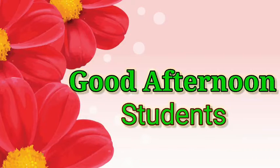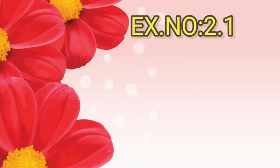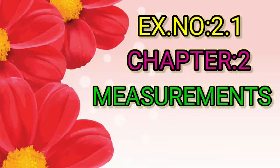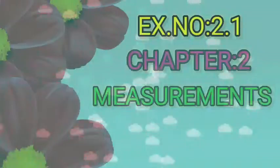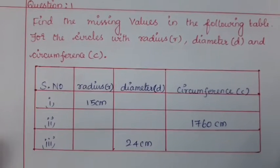Good afternoon students, I hope you are well at home. By God's grace, today in our online video class we are going to learn Exercise number 2.1 in Chapter 2: Measurements. Watch the video carefully without any distractions till the end and learn everything thoroughly. Let us start to learn Exercise 2.1, Question number 1: Find the missing values in the following table for the circles with radius r, diameter d, and circumference c.